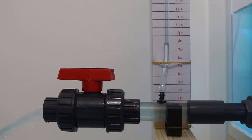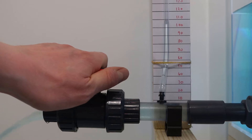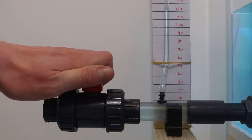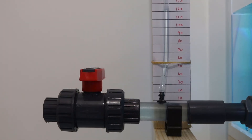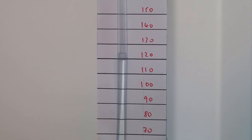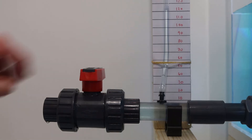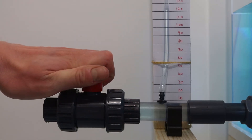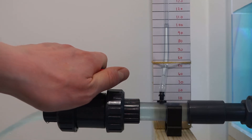If I close the valve, all of the energy in the system is now either pressure or elevation, as there is no kinetic energy since no water is moving. We can see that in the pipe all of the energy is now in the form of pressure, and the pressure in the pipe is the same as the pressure in the tank. However, if I open the valve, the pressure in the pipe drops, as some of the pressure is converted into kinetic energy as the water moves and we get a velocity.